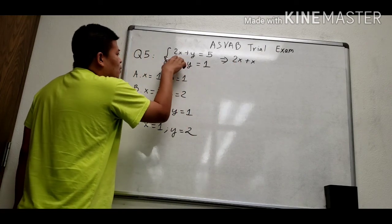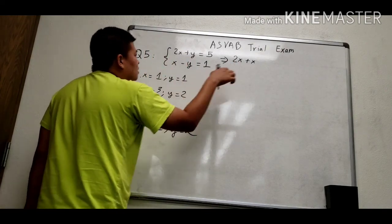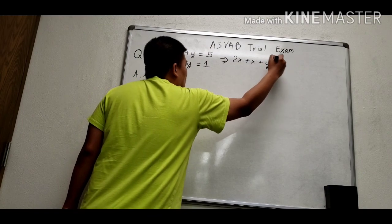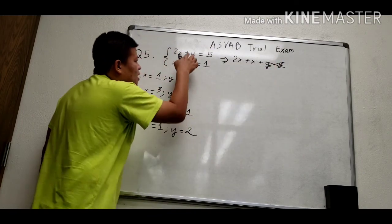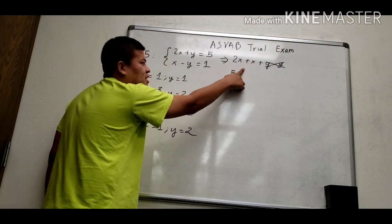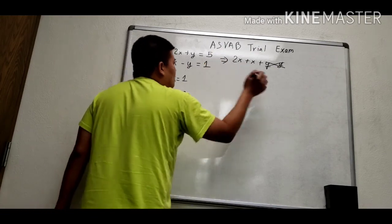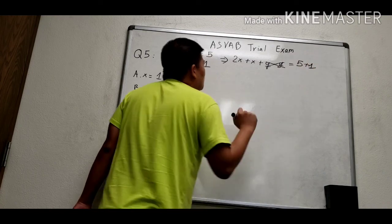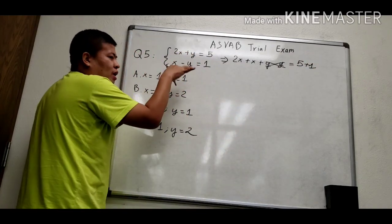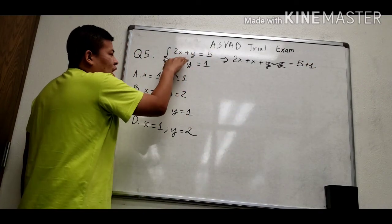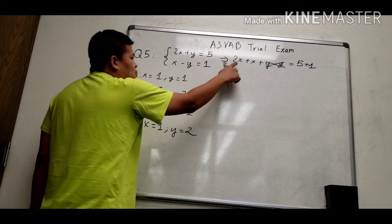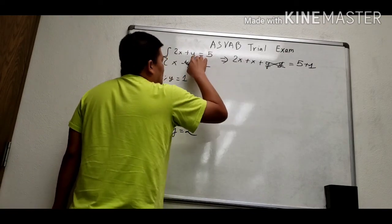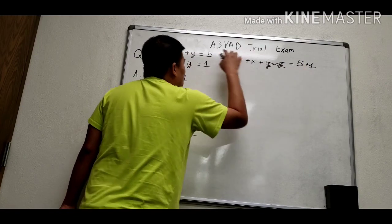We have 2x plus x, and y minus y — they will be eliminated together. That's why we can find x first. We sum the two equations side by side, so we have 2x plus x, y minus y, and 5 plus 1.